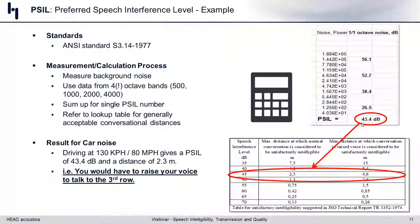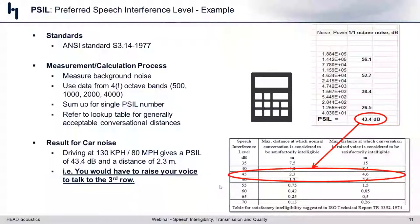The second step is to refer to a lookup table. Our PSIL of 43.4 — roughly 45 — tells us that a conversation at normal speaking level is intelligible up to about 2.3 meters away. If you raise your voice, you might double that distance to 4.6 meters — roughly 8 to 16 feet. That's what the PSIL number tells us from a practical standpoint.